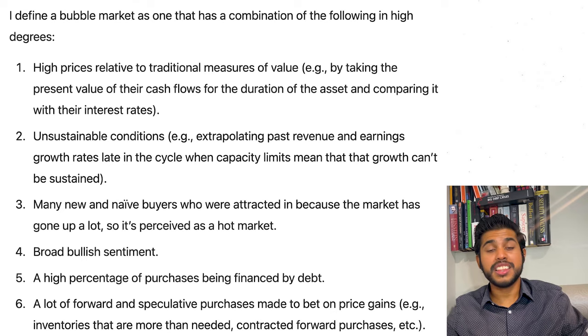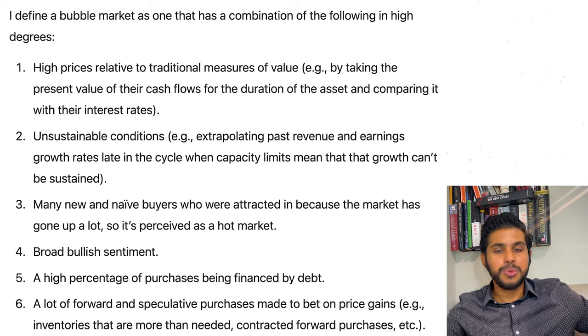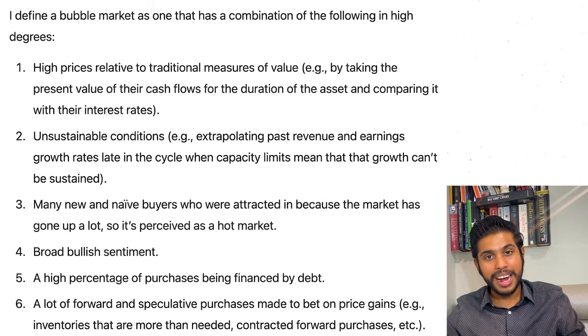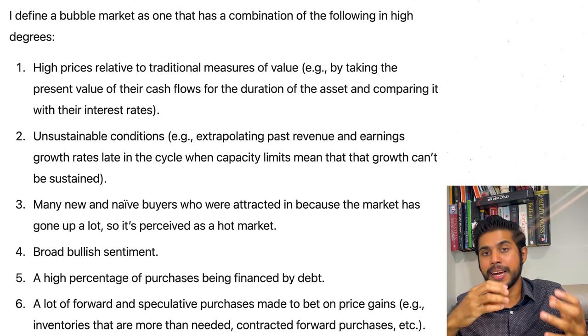Number four is that there is a broad bullish sentiment — everyone thinks that we are in the best of times and that stocks are just going to go up. Number five is that a high percentage of investments are being financed by debt — that's what we call leverage, or margins. You take a second mortgage on your house and you're investing, so this may be a sign that we are in a bubble.